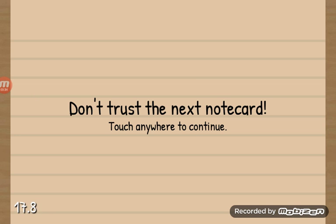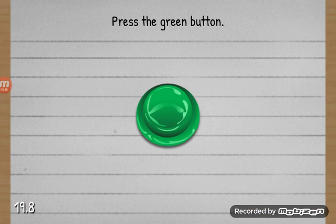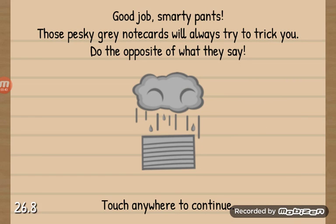Don't trust the next note card. Touch any word to continue. Press the green button. Said not to trust you. Not gonna trust you. Here we go. Those pesky gray note cards. They do the opposite of what they say.